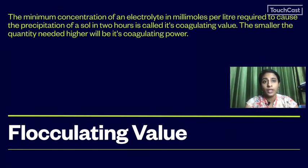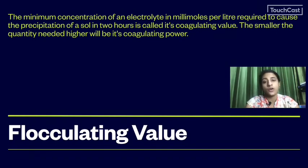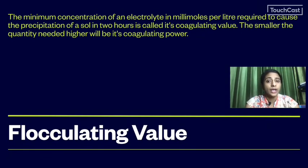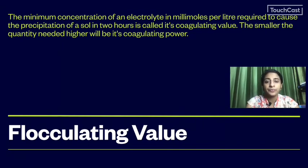The flocculating value, also called the coagulating value, is the minimum concentration of an electrolyte in millimoles per litre required to cause the precipitation of a sol in two hours. The flocculating power refers to how effective the electrolyte is at causing coagulation.